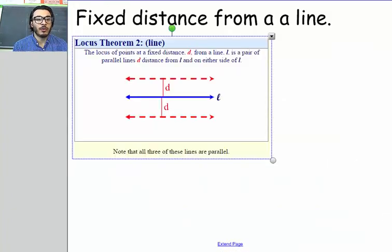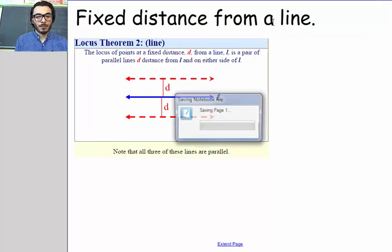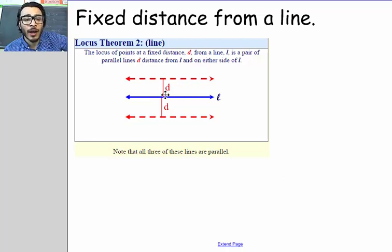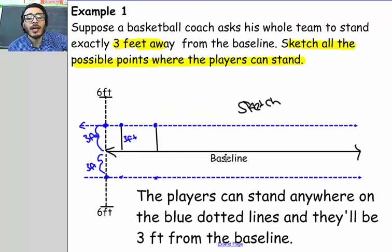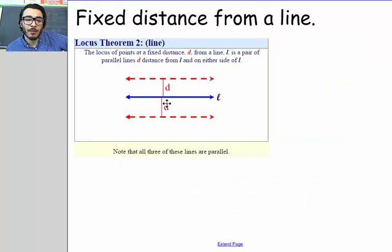That brings us to Locus Theorem 2, which is a fixed distance from a line. Locus Theorem 2 says: the locus of points at a fixed distance D from a line is a pair of parallel lines, distance D from line L, on either side of L — L being the given line. So that's what we just saw here. If you're given a line and you are asked to sketch the locus of points from a line, the result will be two parallel lines, one on either side of the given line. That's what the theorem says.